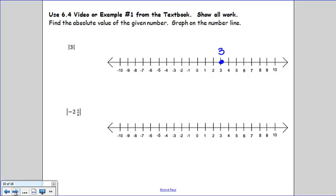Here's 3 on your number line. The distance from 0 to 3 is 3 units. That means that the absolute value of 3 is 3.